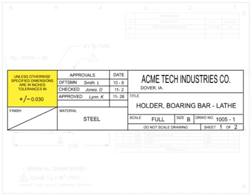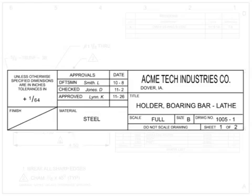Examples of tolerances are plus or minus 0.030 or plus 1/64th of an inch. The remaining areas of the block can be tailored for other information such as material, heat treatment, finishes, weight, general specs and standards, higher assembly information or superseding information. Other boilerplate information such as copyright information, export control information, design activity, and manufacturing information may also be included in or next to the title block.